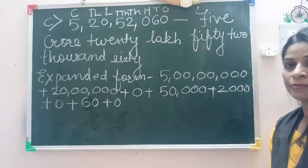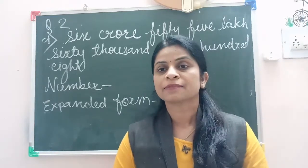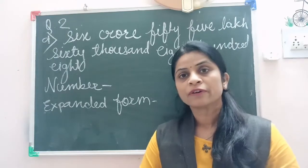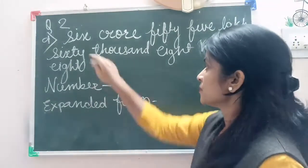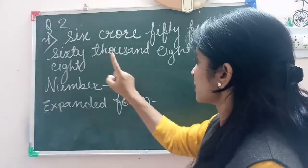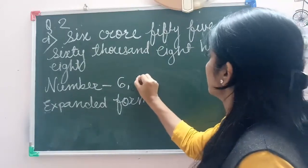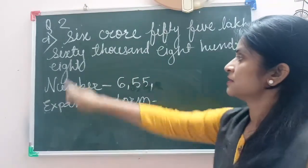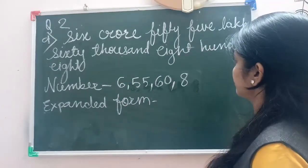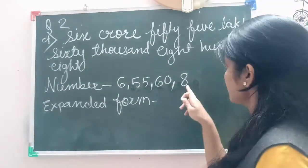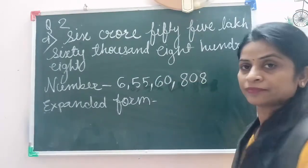The expanded form: each number multiplied with its place. Now see question number 2 — the number name is given and you have to write the number and expanded form. The number is 6,55,60,808. Now we will write the number name. First, the crore period is having one digit, that is 6 crore. We will separate it by putting the comma: 55 lakh, 60,808.